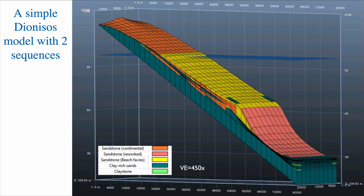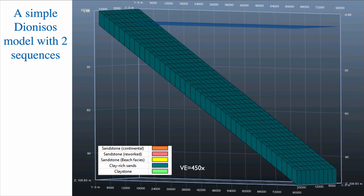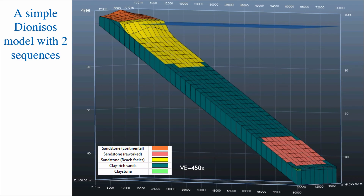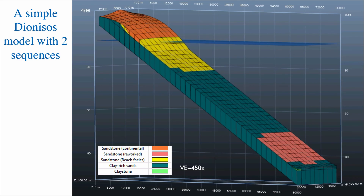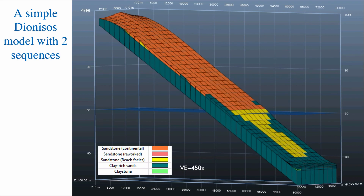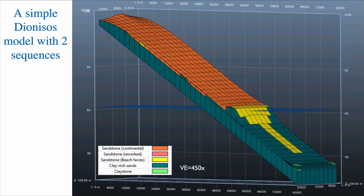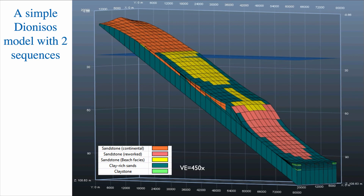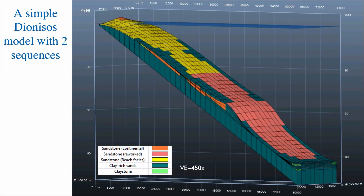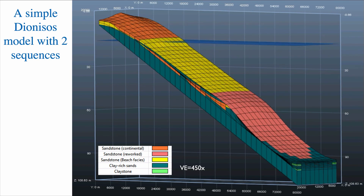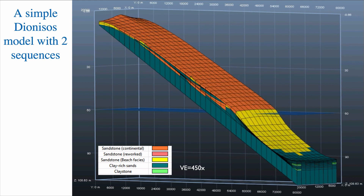So two full sequences — let's have a look at this again. Pay attention to where sea level is. Look at the sand going down and then going back up. Now we're at the high stand, and now sea level goes back down.